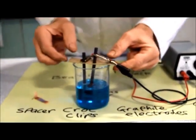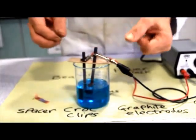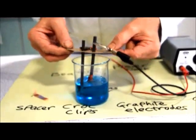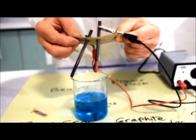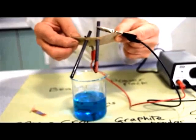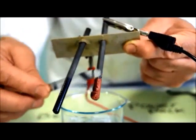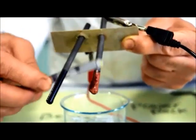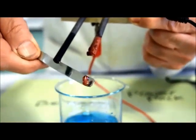After a minute, we turn the power off at the mains and lift the electrodes out. You can see on the negative electrode, we have copper buildup. Using the spatula, you can scrape it and see the copper that's formed.